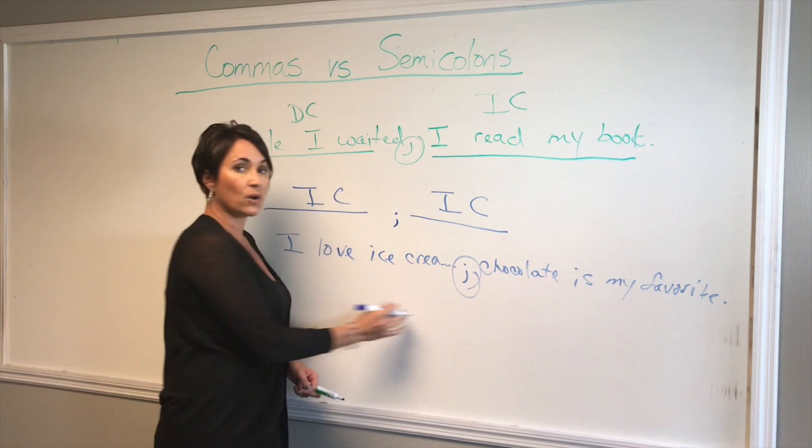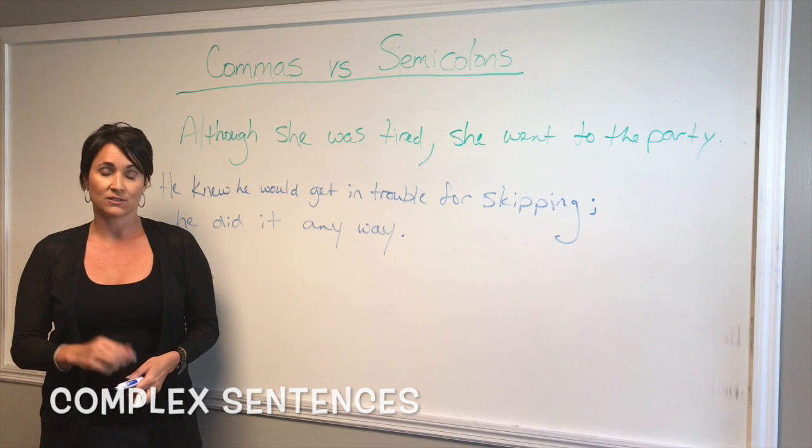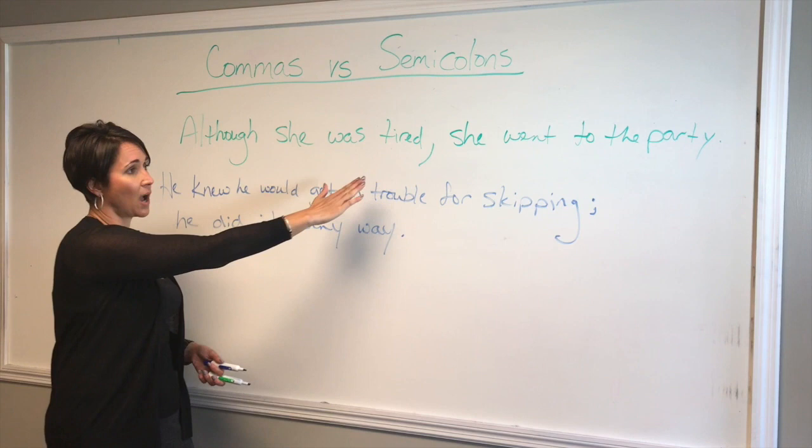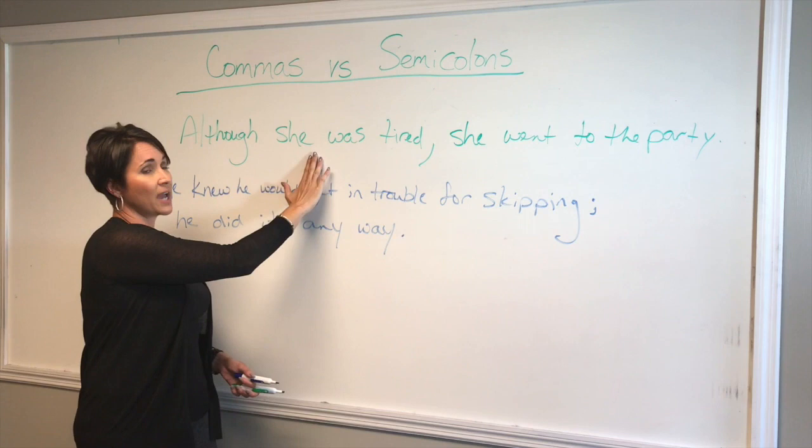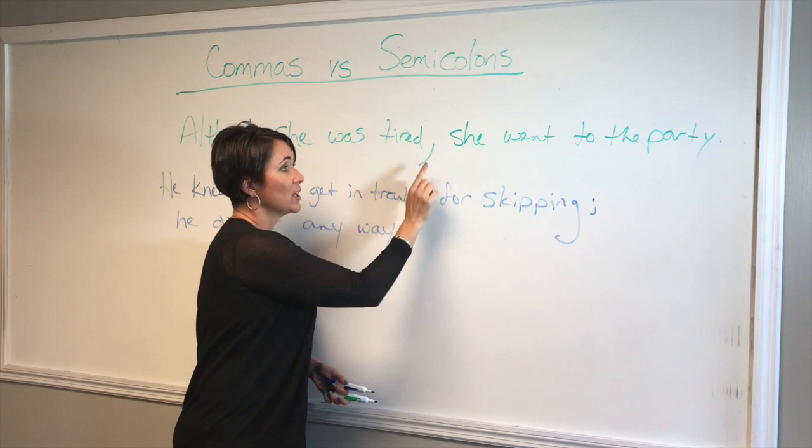So those sentences were easy sentences. Let's take a look at more complex sentences when we're talking about commas versus semicolons. In the first sentence, we have: 'Although she was tired, she went to the party.' This is the proper use of the comma here because 'Although she was tired' is the intro or dependent clause, and 'she went to the party' is the independent clause. So in this case, the comma works.